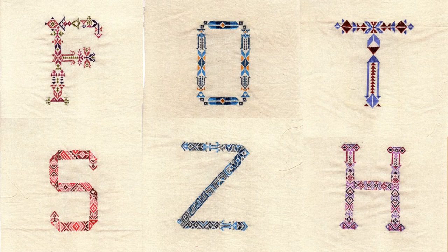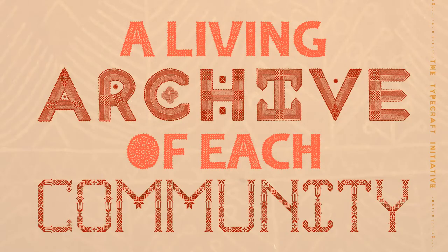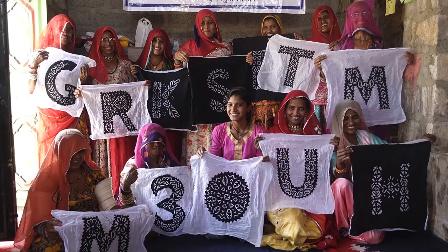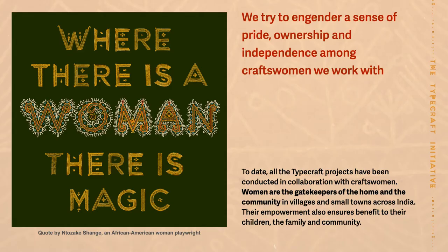Here we see some of the final embroideries done by the craftswomen. The idea of community is at the heart of TypeCraft — not only from the perspective of collaboration and mutual respect, but also how society in many parts of India still organizes in terms of caste and community. By embedding motifs, patterns, and meaning relevant to each community, the typefaces represent a long lineage, a living tradition, and an identity developed over centuries. Women are the gatekeepers of the home and the community in villages and small towns across India. Their empowerment ensures benefit to their children, the family, and the community.